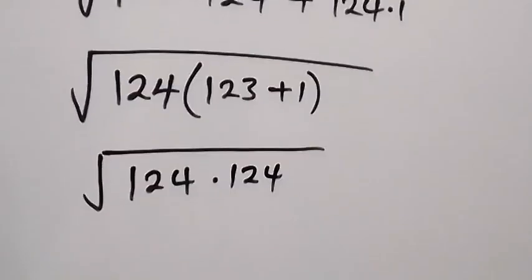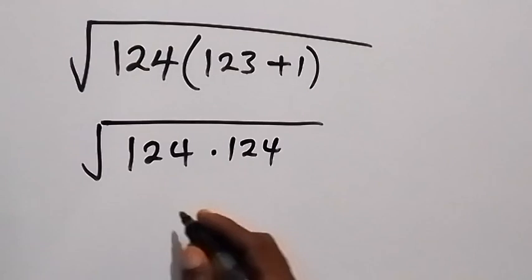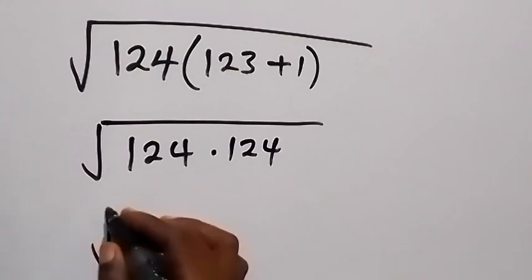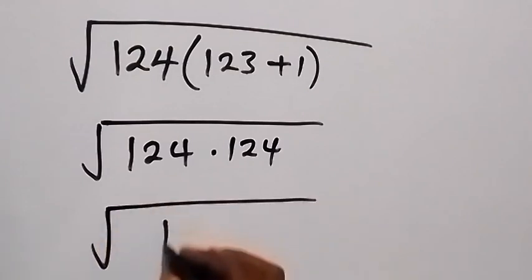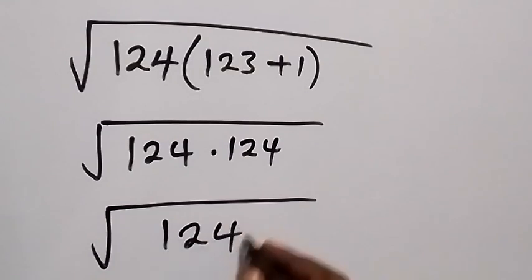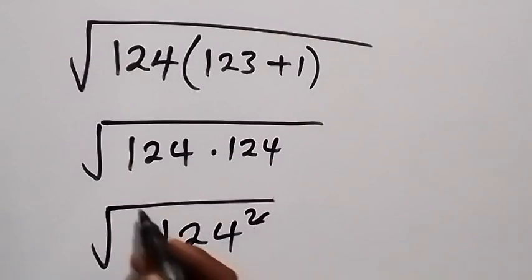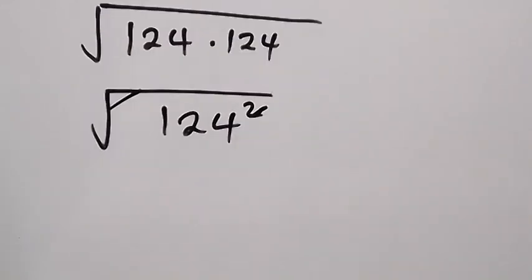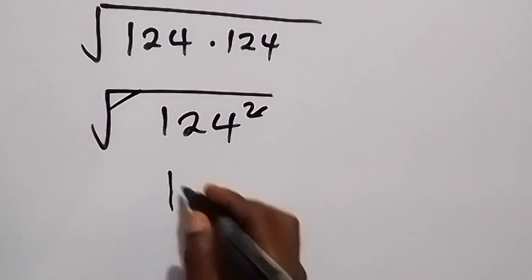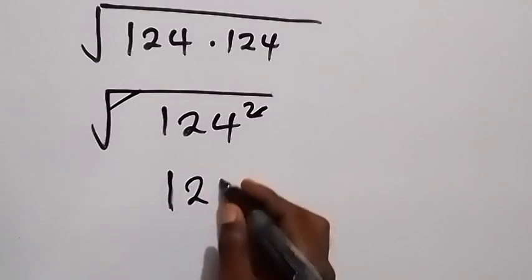And 124 times 124, that's 124 squared. So we have square root of 124 squared. And from here, square can cancel square root, and then finally the answer here is 124.